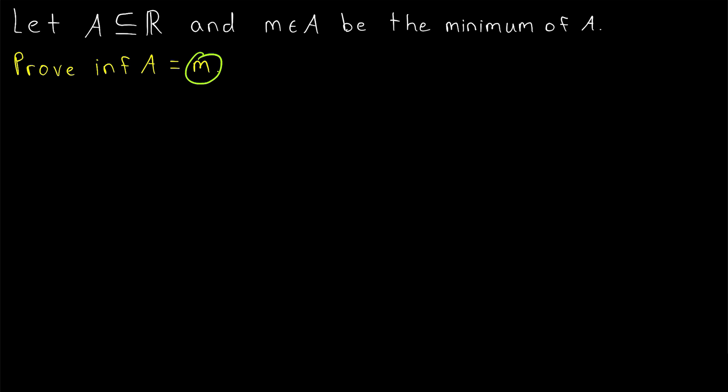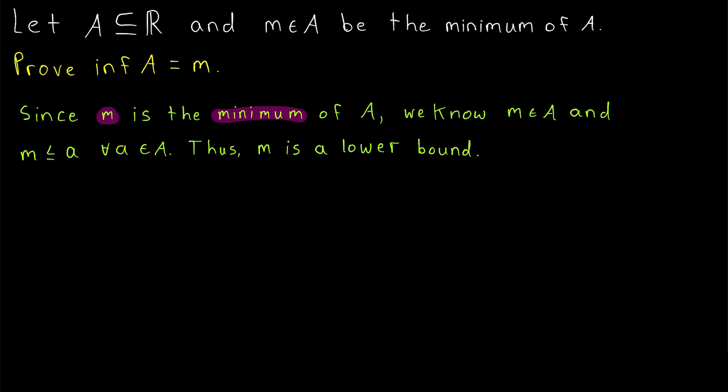We immediately are able to conclude that M is a lower bound of A by definition of minimum element. So since M is the minimum of A, by definition, that means M is an element of A, and M is less than or equal to every element of A, and it's this second part that M is less than or equal to every element of A, that is the definition of a lower bound. So M is a lower bound of the set A.